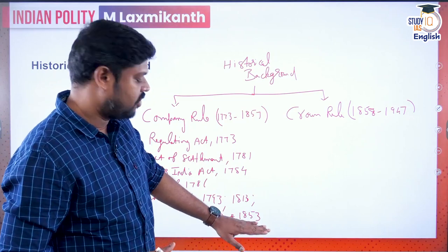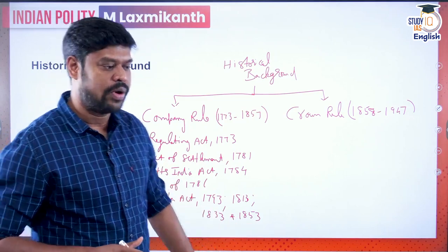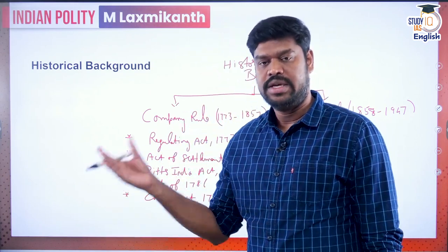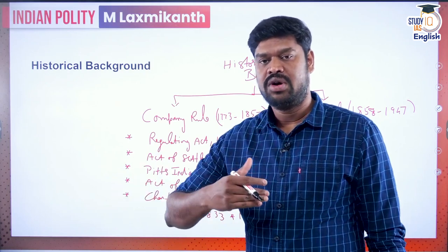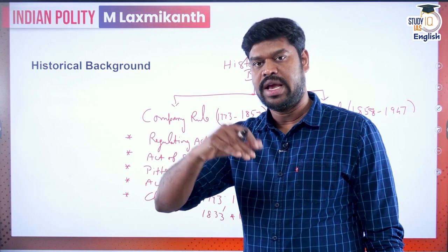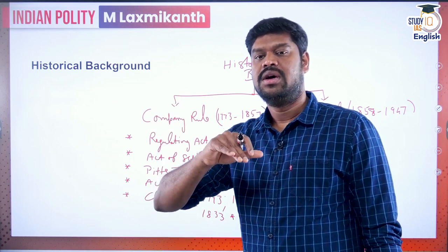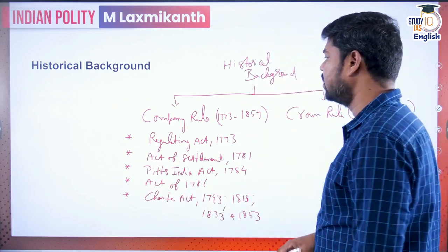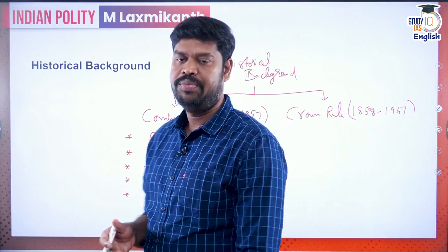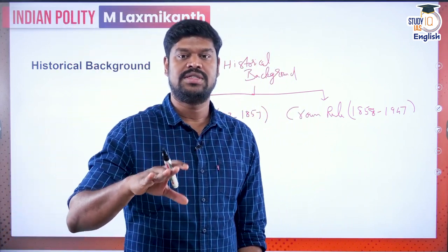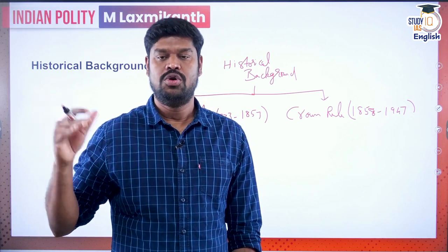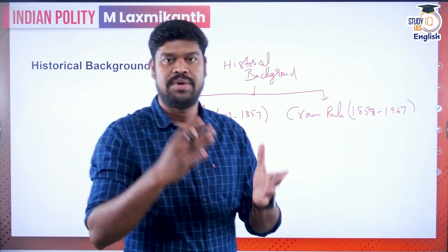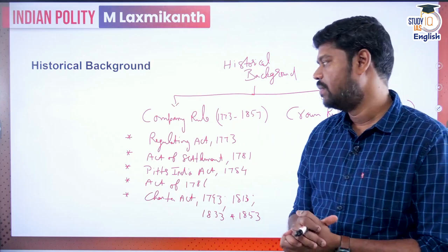The Charter Act of 1853 was not willing to provide further extension for a specific time period for the East India Company to administer. It did not give a fixed time limit, providing that the Company could carry out administration in India as long as Parliament had not made a law to take up the administration. In the meantime, in 1857, the Sipoy Mutiny occurred, and the British Parliament decided to take up administration directly — no longer through the East India Company but by the Crown itself.